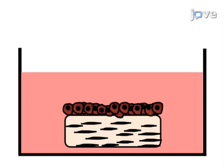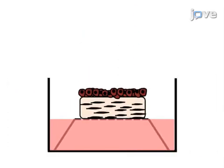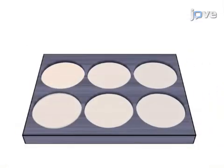The final step is to perform the air-liquid interface culture and invasion assay through exposure of the contracted gels to air by placing them on a mesh situated in a six-well plate.